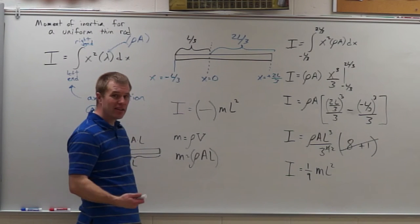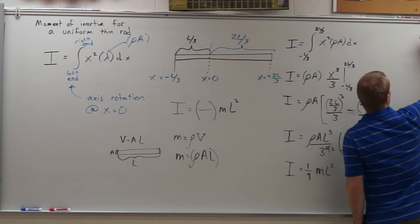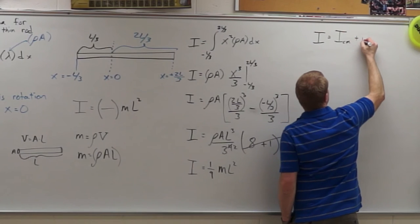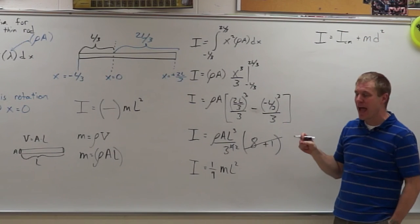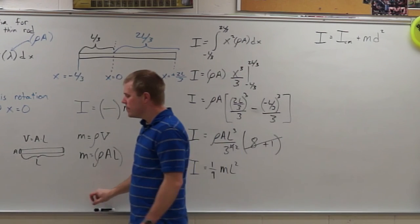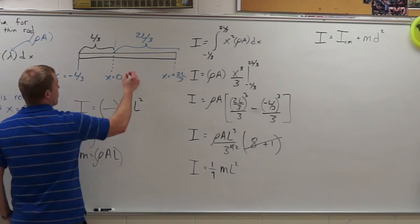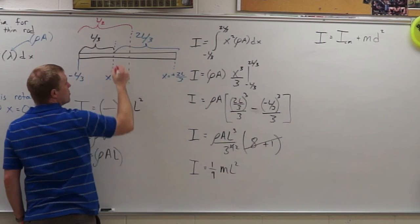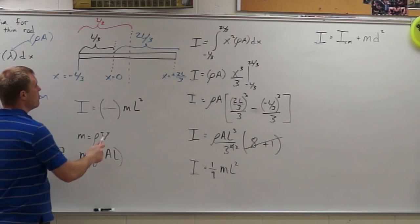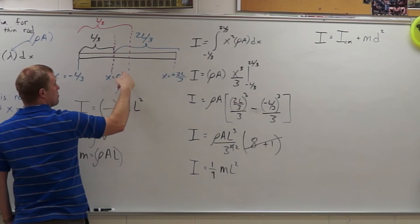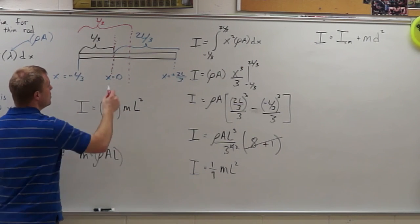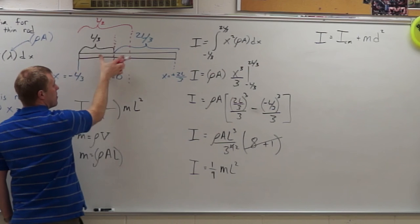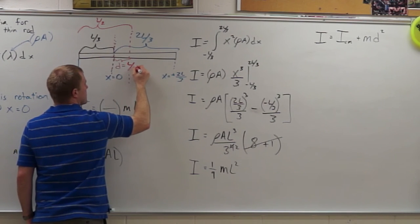Now we're going to look at using the parallel axis theorem, which states that the moment of inertia equals the moment of inertia through the center of mass plus md squared, where d is the distance between the two axes of rotation. The center of mass is at the center of the rod at L over two. Our axis is at L over three from one end, so the distance d between the two axes is L over six.